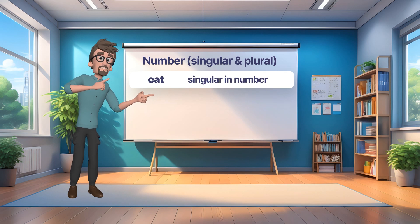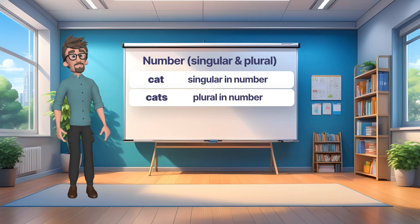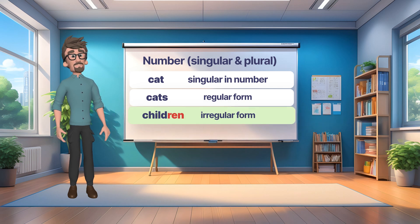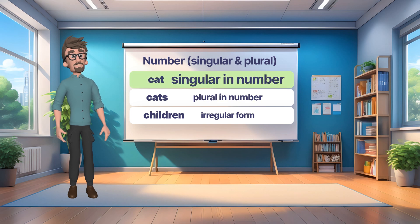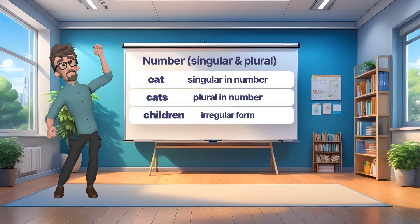And now going back to nouns and number. Cat, singular number. Cats, plural number, and that's a regular form. And children, which is still plural number, but that's an irregular form. In other words, singular number, meaning singular form, and plural number, meaning plural form. So now you have it.